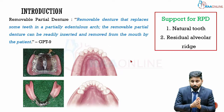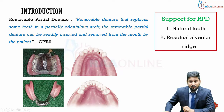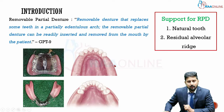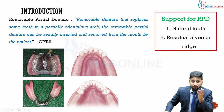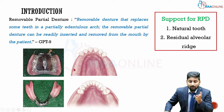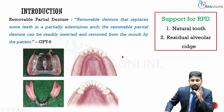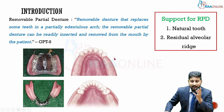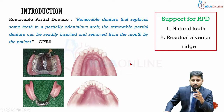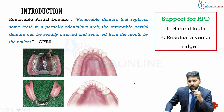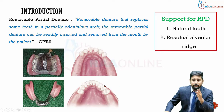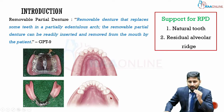A removable partial denture takes support from both the remaining teeth and the residual alveolar ridge. The proportion of support from each depends on the length of the edentulous span. When all posterior teeth are missing — close to eight teeth — more support comes from the residual alveolar ridge. When only two molars on each side are replaced, there is more support from the natural teeth and less from the ridge.